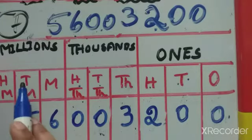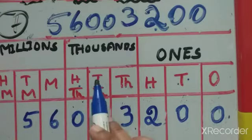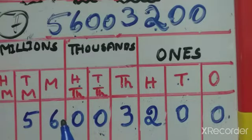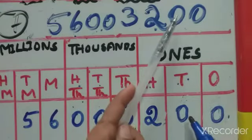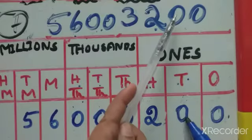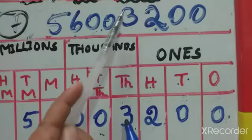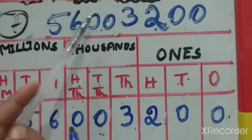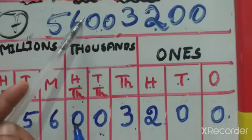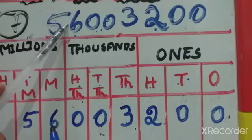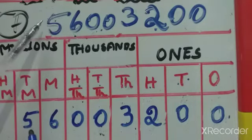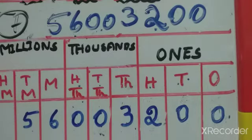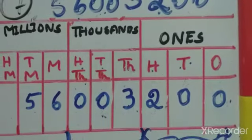And 5 in the ten-millions place. So: M means million, TM means ten million, H means hundred, T means ten. To confirm: 0 in ones, 0 in tens, 2 in hundreds, 3 in thousands, 0 in ten-thousands, 0 in hundred-thousands, 6 in millions, 5 in ten-millions.